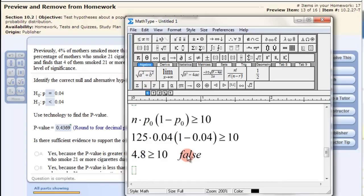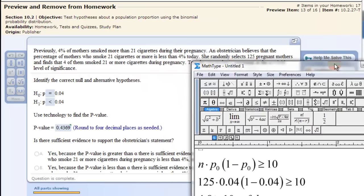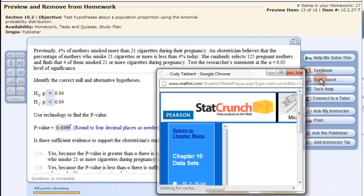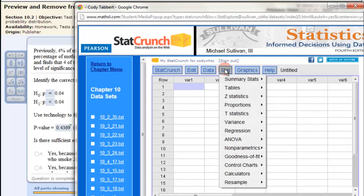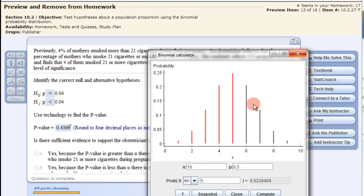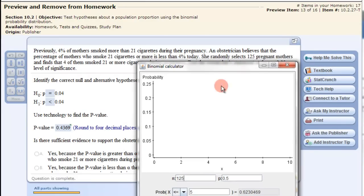We cannot use a normal distribution to do this test. We have to go to a binomial distribution when the numbers are small like that. So, instead we open up StatCrunch and we go to the binomial. So, Stat, Calculators, and Binomial. We use the n, 125, the probability of success 0.04, right? The p-naught. That's the probability of success.